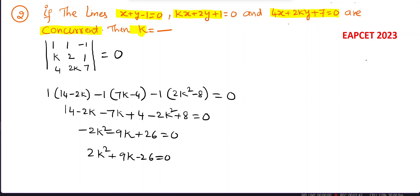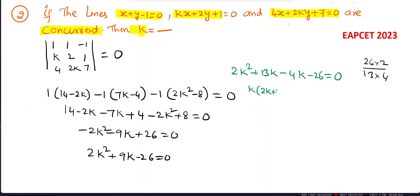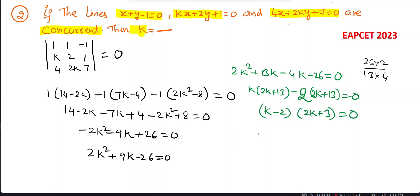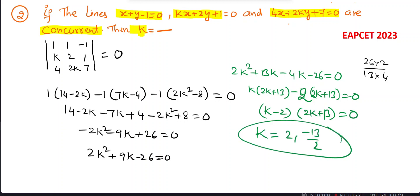Factoring 2k² + 9k - 26 = 0: 26×2 = 52, factors 13 and 4 give 13 - 4 = 9. So 2k² + 13k - 4k - 26 = 0, giving k(2k + 13) - 2(2k + 13) = 0, hence (k - 2)(2k + 13) = 0. Therefore k = 2 or k = -13/2.